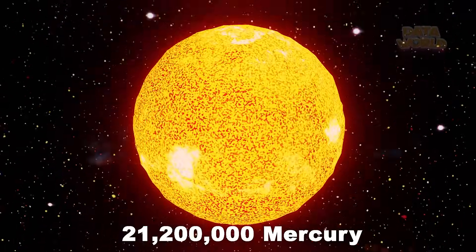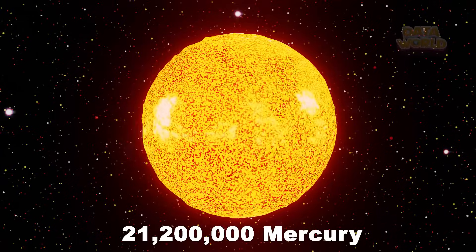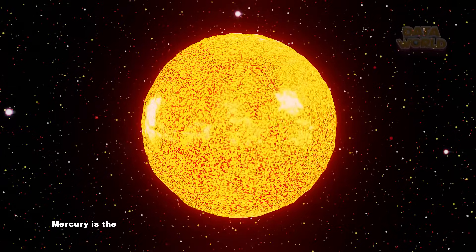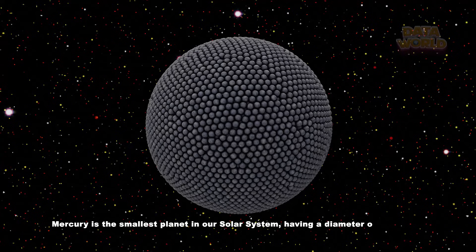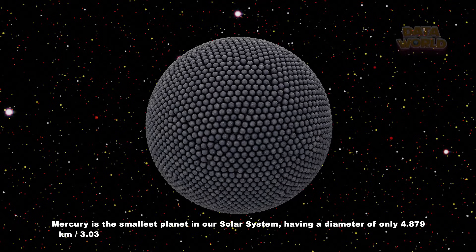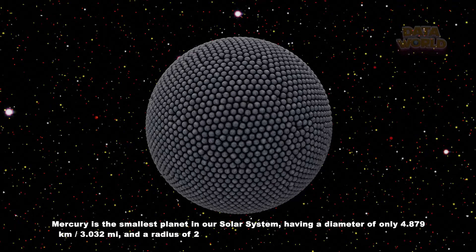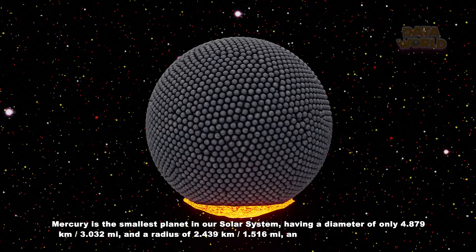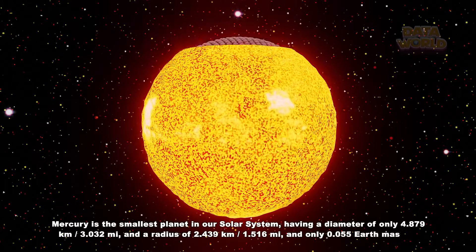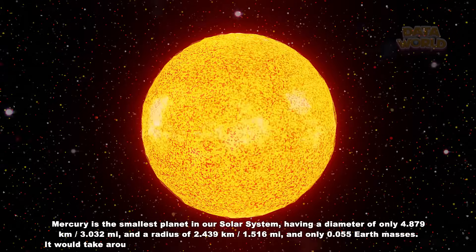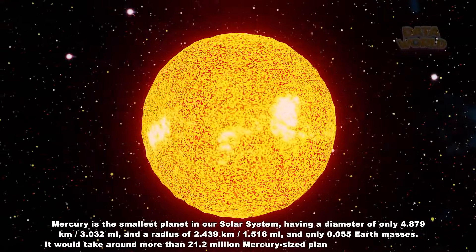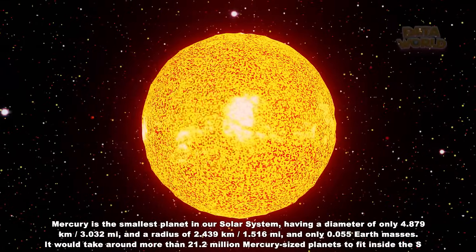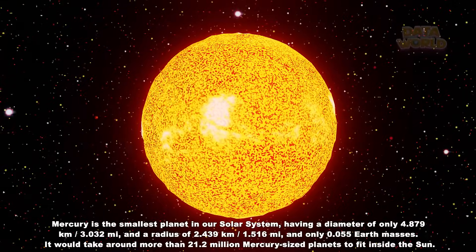21.2 Million Mercury. Mercury is the smallest planet in our solar system, having a diameter of only 4,879 kilometers, 3,032 miles, and a radius of 2,439 kilometers, 1,516 miles, and only 0.055 Earth masses. It would take around more than 21.2 million Mercury-sized planets to fit inside the Sun.